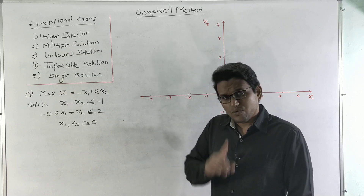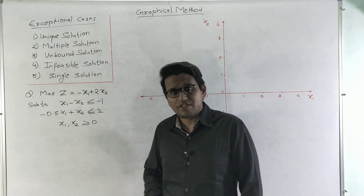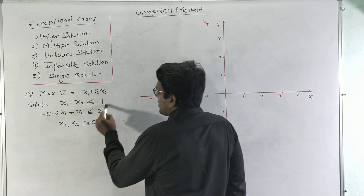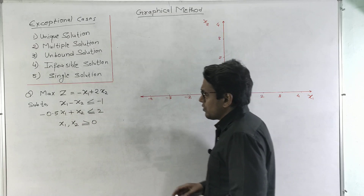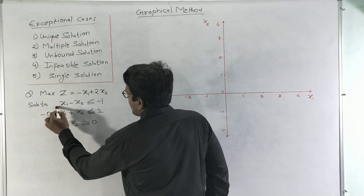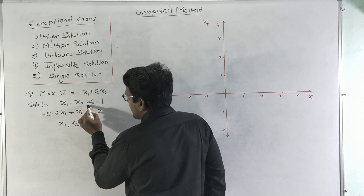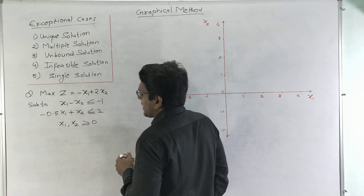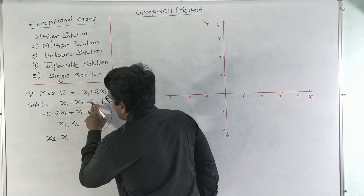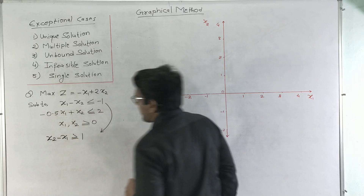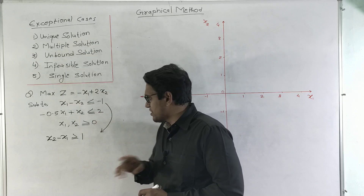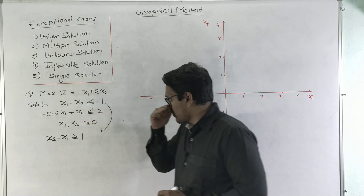We need to check the two prerequisites discussed in previous lectures. The first prerequisite is that the right-hand side value of each constraint should not be negative. In the first constraint there is a negative value on the right-hand side, so we multiply equation one by minus one and simultaneously reverse the inequality sign. The constraint turns into: x2 minus x1 greater than or equal to 1. Now both constraints satisfy the first prerequisite.